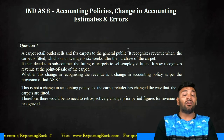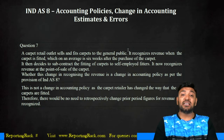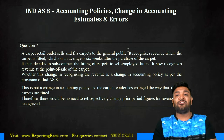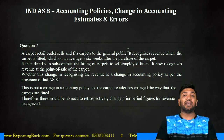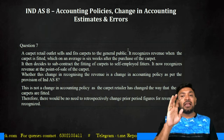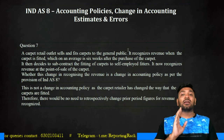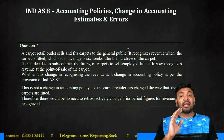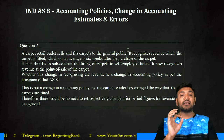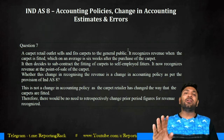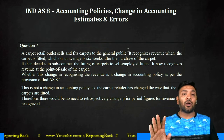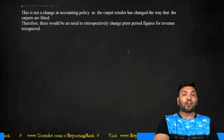IND AS 8 question: A carpet retail outlet sells and fits carpets to the general public. It recognized revenue when the carpet was fitted, which on average is six weeks after purchase. It has now decided to subcontract fitting to self-employed fitters and recognizes revenue at the point of sale. Can this change in revenue recognition be a change in accounting policy? Absolutely no — it is only a change in circumstances requiring a change in revenue recognition procedure. There is no change in accounting policy whatsoever, so no retrospective amendments.